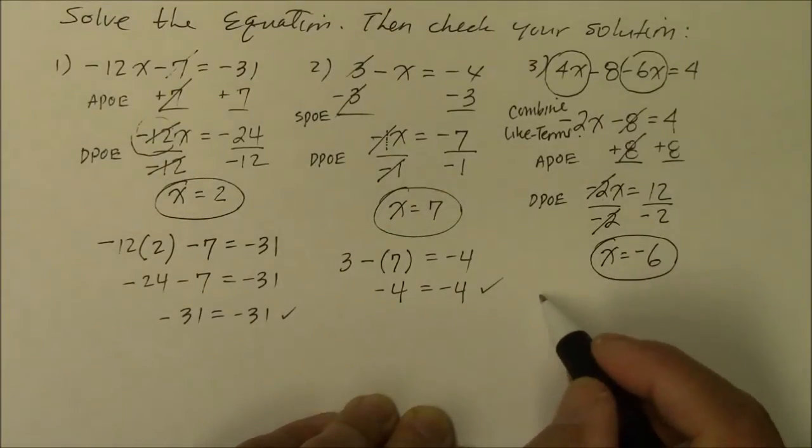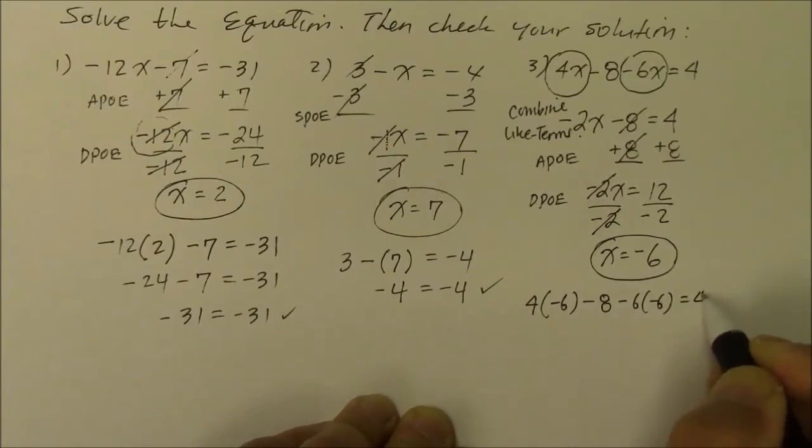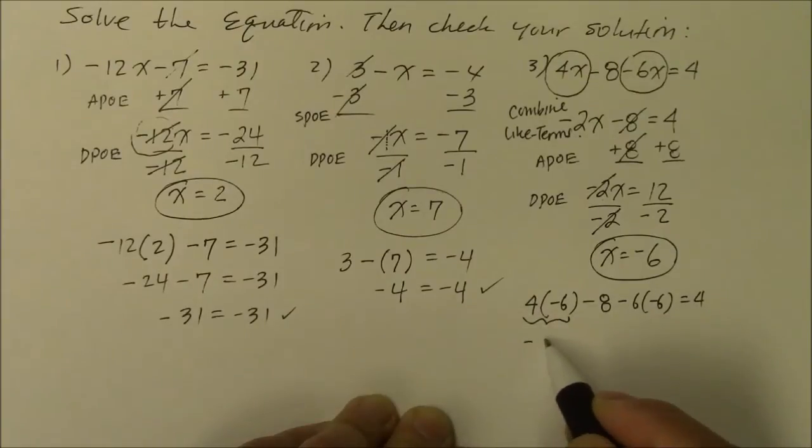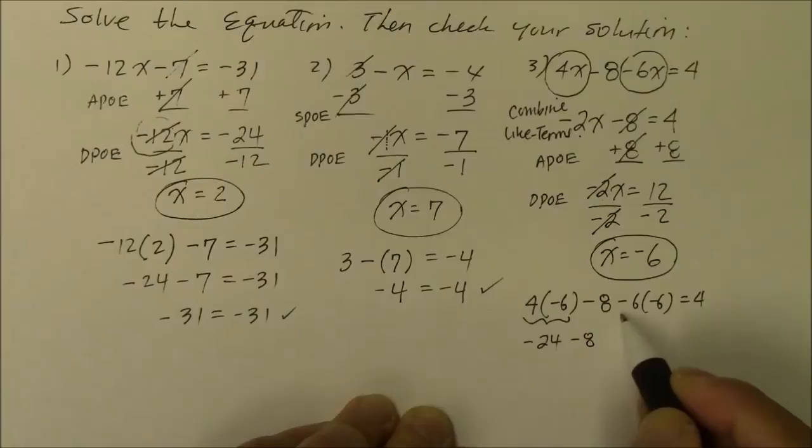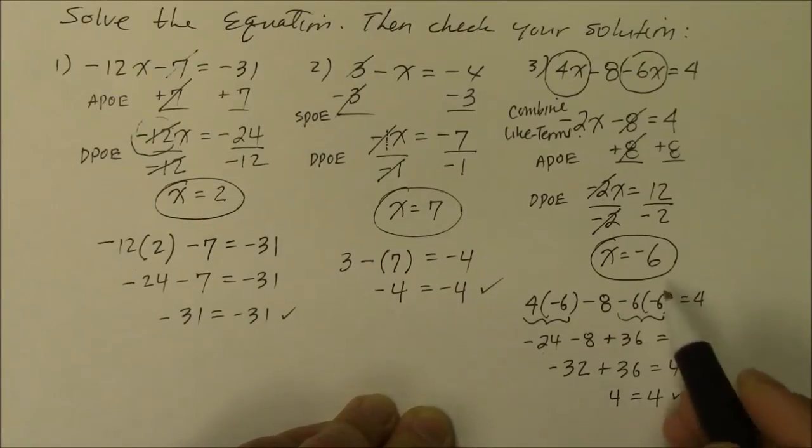To check it, I'll go 4 times negative 6 minus 8 minus 6 times negative 6 equals 4. 4 times negative 6 is negative 24 minus 8. Negative 6 times negative 6 is positive 36, and I hope they all equal 4. I take away $24 from the bank, I take away 8 bucks. I took away a total of $32 from the bank, I owe the bank $32. But what am I doing next? I'm adding or making a deposit of 36. So I don't owe the bank money anymore. I in fact have $4 balance in my bank account. So since the left and right equals, that is my good answer.